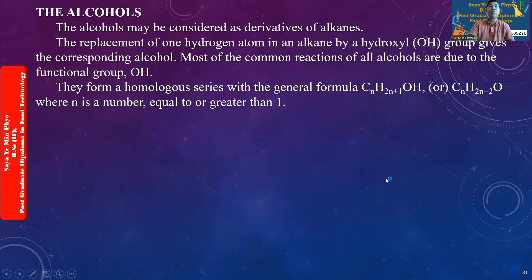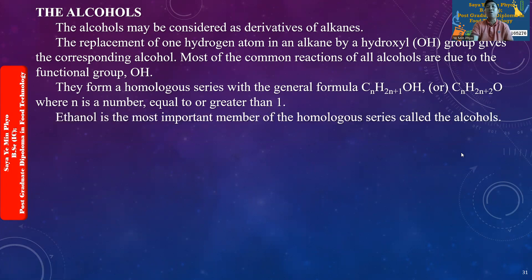They found a homologous theory with a general formula. The most important member of the homologous theory is called the ECHO-HOR. The ECHO-HOR is important and is the first question on the topic.